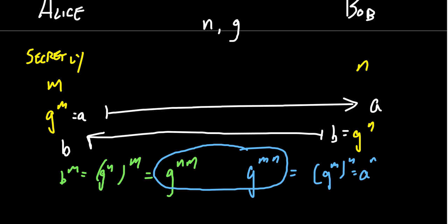But Eve, who's eavesdropping, she'll have the modulus, she'll have the element g, but she won't know n, she won't know m, she'll have a, and she'll have b. But it turns out with these four bits of information, the order of g, g, a, and b, if the group is chosen sufficiently large, then we're guaranteed that Eve would not be able to determine these common powers, even though she knows this is a power of g, and she knows this is a power of g, she can't figure out what the combined power is, because the calculation is too difficult.